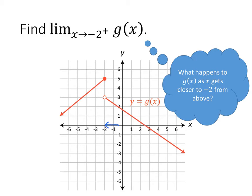Sometimes we'll say: find the limit as x goes to negative 2 from the right of g. So we're ignoring x-values less than negative 2 and only looking at x-values bigger than negative 2, asking what happens to those y-values. The y-values that correspond to those x-values are getting closer to positive 3 as x approaches negative 2. So even though there's an open circle there, the y-values are getting closer to positive 3, meaning this limit equals positive 3.